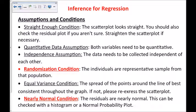The next one is the independence assumption. The data needs to be collected independent of each other. One of the important ones is the randomization condition. In order for us to generalize this to some larger population, the individuals must be representative of that population. The equal variance condition is an important one, where the spread of the points around the line of best fit is consistent throughout the graph. If not, we'll need to re-express the scatterplot.